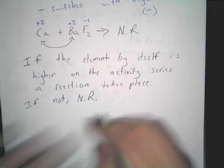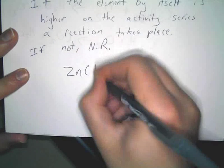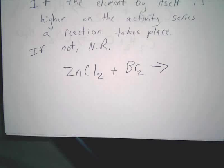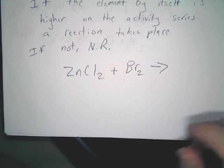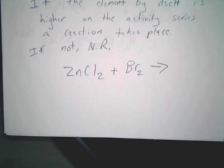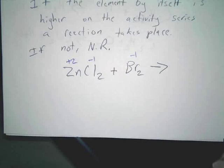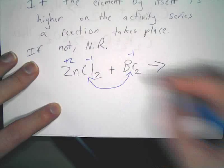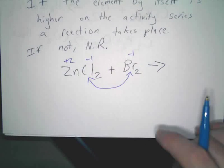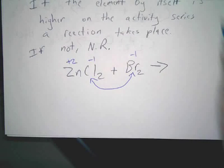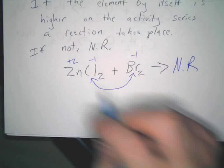Let's do an opposite example where we've got ZnCl₂ plus bromine. This is a little different — we're looking at a halogen replacement, a negative ion swap, as opposed to two positive ions. Zinc is plus two, chlorine is minus one, bromine is minus one. Like charges switch, so you're comparing chlorine and bromine. Looking at your activity series on the non-metal side, chlorine is higher up. So no reaction takes place, due to chlorine being higher on the activity series.